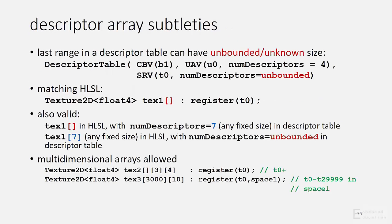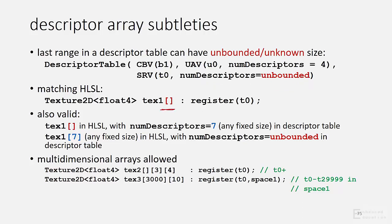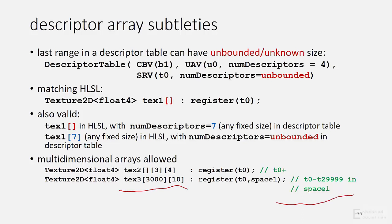There are a couple of subtleties with descriptor arrays. When descriptor tables are declared as a sequence of descriptor ranges, the last range in the table is allowed to have num_descriptors declared as unbounded. The HLSL code that matches that would use the empty bracket syntax. You could also declare an unbounded size array in HLSL and match it with a root signature that has a fixed size num_descriptors, or vice versa. Multidimensional arrays can also be declared, and they simply get flattened out in the register linkage space.